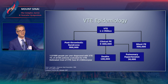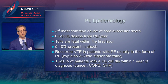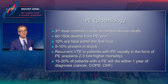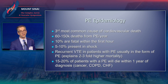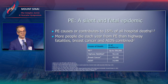We're dealing with a very significant problem. PE is the third most common cause of cardiovascular death, and 10% are fatal within the first hour. When we talk about recurrent VTE in patients who have PE, it's usually in the form of PE, and this explains a two- to three-fold higher mortality. Anywhere between 15% and 20% of patients with a PE will die within a year of diagnosis, and a lot of that is due to their medical comorbidities. It is a very significant cause of death in this country, even more than some of the things that get a lot of press.